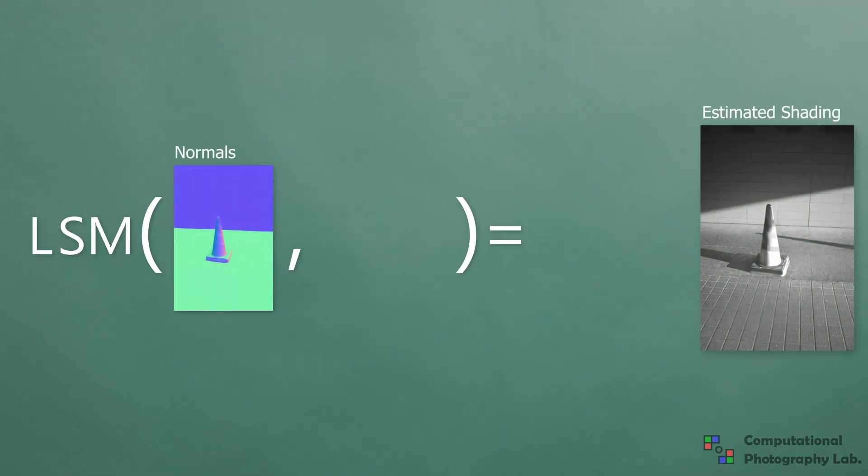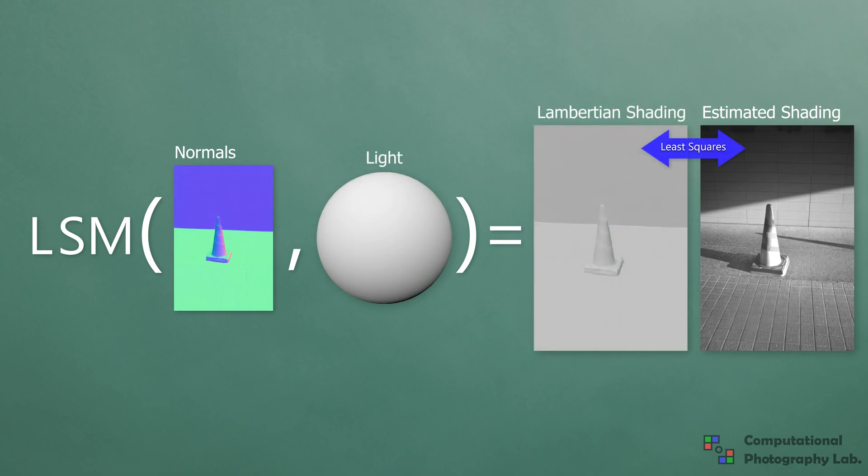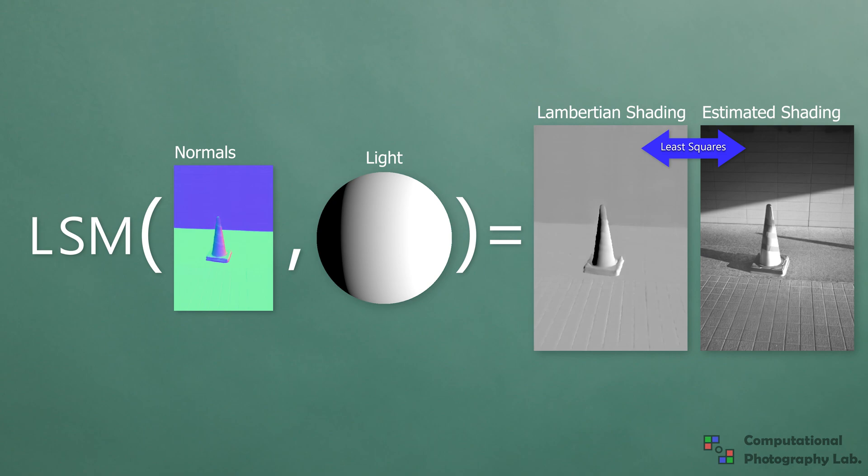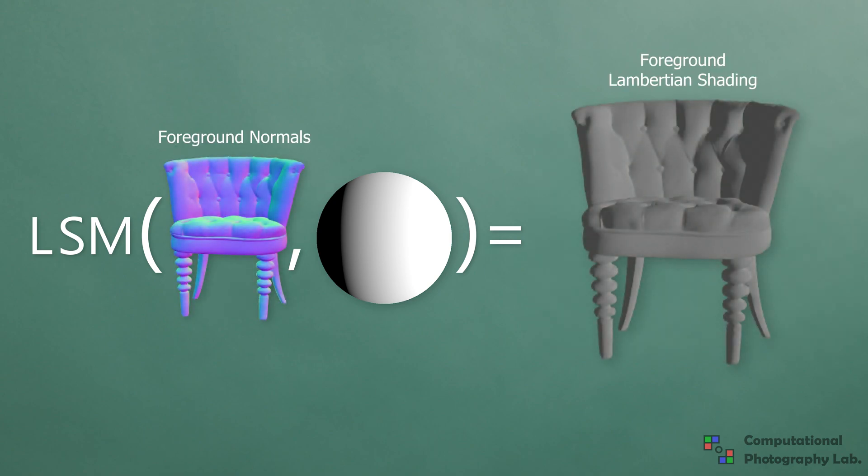Using the estimated shading and normals for the background scene, we estimate illumination parameters using least squares in the Lambertian equation. With our estimated illumination for the background, we can now compute the Lambertian shading of the foreground using estimated normals for the composited object.